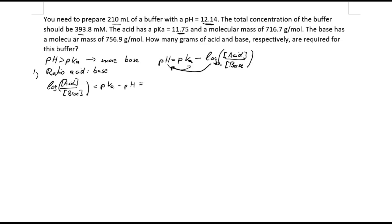Plugging in numbers: the pKa is 11.75 minus 12.14, which gives us a value of negative 0.39.